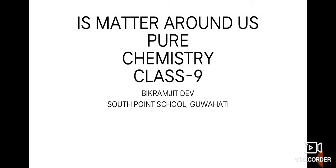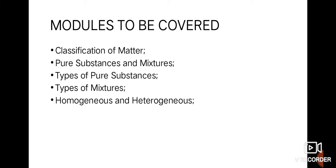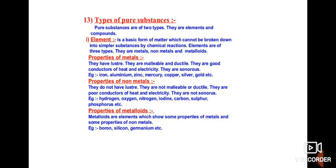Hello students, this is your second chapter from chemistry named 'Is Matter Around Us Pure?' In this video we shall be covering the classification of matter, what are pure substances and mixtures, the different types of pure substances, and the different types of mixtures — homogeneous and heterogeneous.